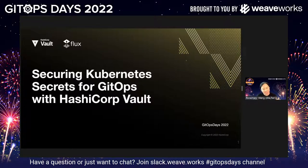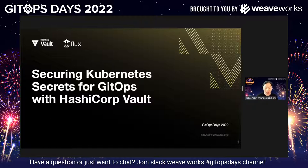I've seen this in the Slack quite a bit, so we'll answer some questions and I'll try to sort of answer some of the previous questions as well. But today we're going to talk about securing Kubernetes secrets for GitOps with HashiCorp Vault. This isn't really a Vault-focused talk as much as just a secrets management talk. There are a lot of questions about how you do secrets management in Kubernetes and by extension GitOps, so we're going to show some of those patterns today.